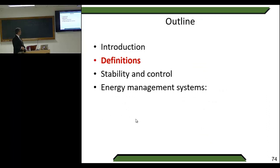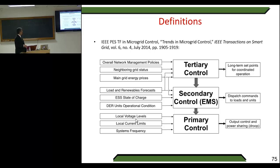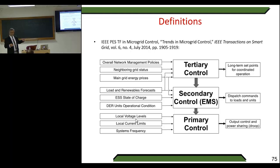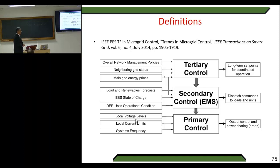Moving to definitions, the papers involved include the first output of the IEEE working group task force dealing with trends in microgrid control. This paper, developed over around three years, summarizes the input from the group. We are now working on a new white paper for a new stability definition for microgrids, and I am happy to add anyone interested to the microgrid mailing list.